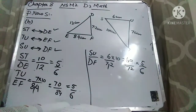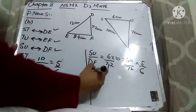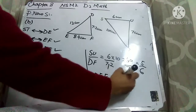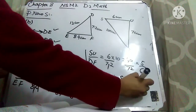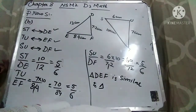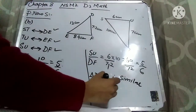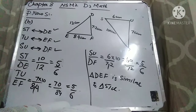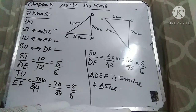Since the ratios of all corresponding sides are equal, it means the figures are similar. So triangle DEF is similar to triangle STU. I hope this question is clear to you. Please do the practice of this sum so the concept becomes clearer. Take very good care of yourself, thank you very much.